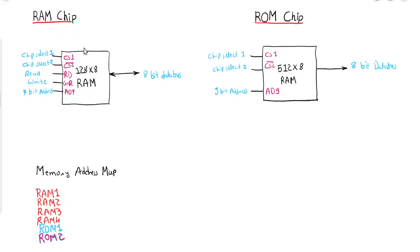As you can see in the RAM chip, there will be five inputs: chip select one, chip select two, read/write, a 7-bit address, and the output will be 8-bit. The data bus is bi-directional because we can use RAM to both store data and read data — read and write operations both can be performed.